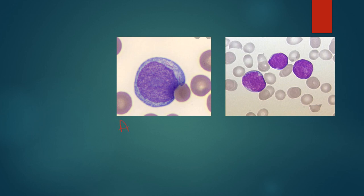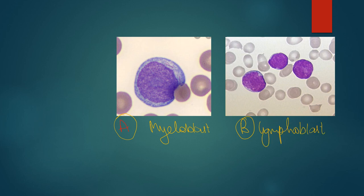Cell labeled as A is a myeloblast and cell labeled as B is a lymphoblast. M for more in size — this is a larger size cell compared to a lymphoblast. More amount of cytoplasm — you can see this has more cytoplasm compared to the very thin rim of agranular cytoplasm in a lymphoblast. Myeloblast is characterized by 3 to 5 prominent nucleoli, whereas lymphoblast has inconspicuous or hardly 1 to 2 nucleoli. The presence of Auer rods is a very important feature — you can see these rod-like structures. If Auer rods are present, you can easily make a diagnosis of myeloblast, and they will be completely absent in a lymphoblast.